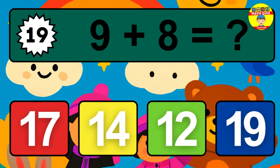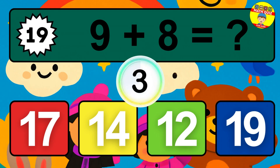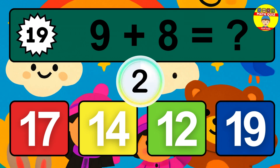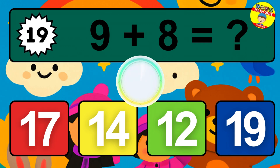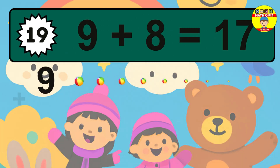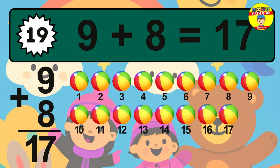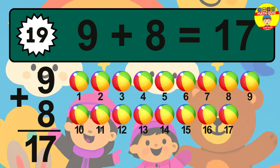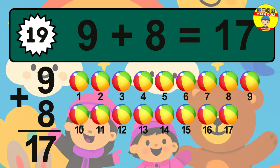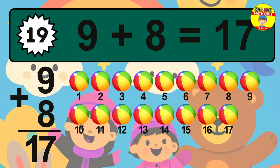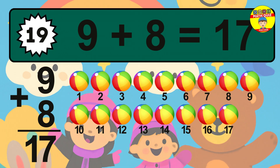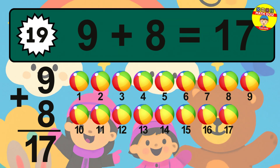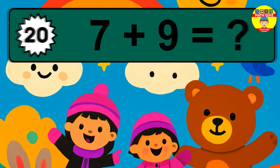Question 19. 9 plus 8 equals what? The answer is 9 plus 8 is 17. Let's count it: 1, 2, 3, 4, 5, 6, 7, 8, 9, 10, 11, 12, 13, 14, 15, 16, 17.